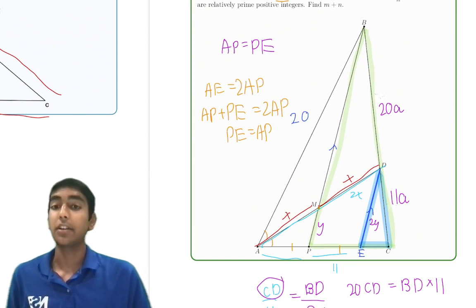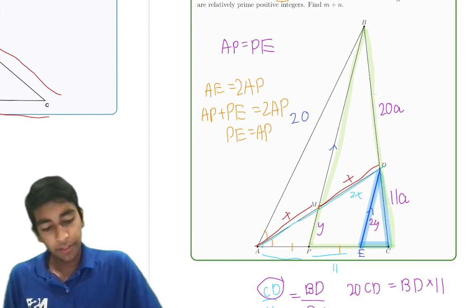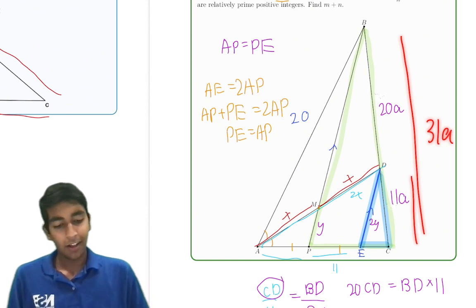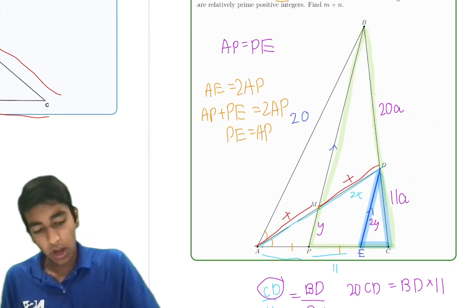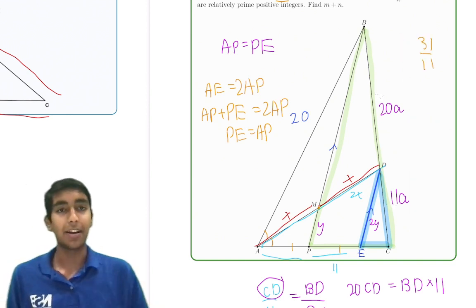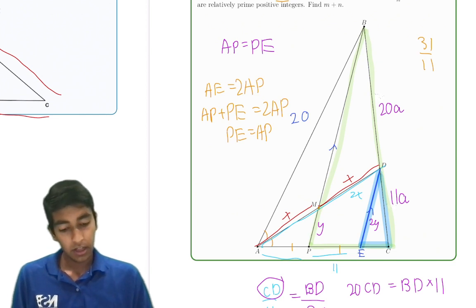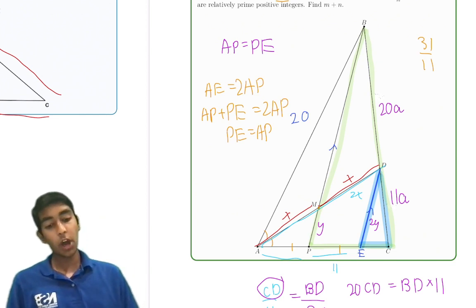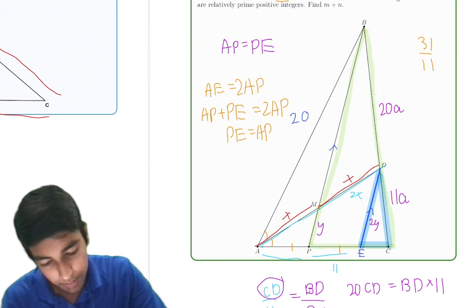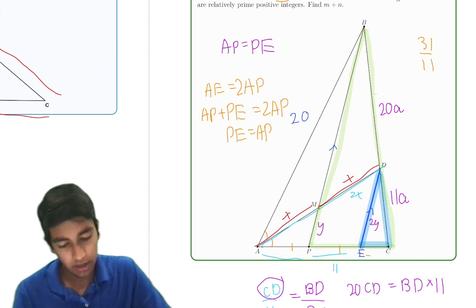What is the scale factor? We know that this is 31A, and this is 11A. So the big triangle is 31 over 11 times bigger. So if the big triangle is 31 over 11 times bigger, what is BP? Or for that matter, what is EC? Because that's what we're trying to find, after all.